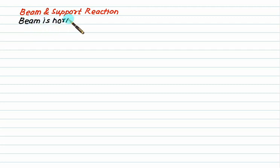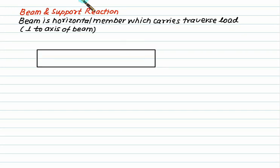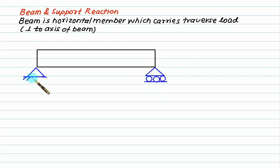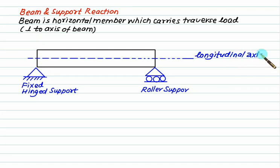A beam is a horizontal member which carries a transverse load that is perpendicular to the axis of the beam. For the beam we normally use two types of support: one is called a hinge support and one is called a roller support. The longitudinal axis of the beam runs along its length, and perpendicular to this axis we have loads called transverse loads.